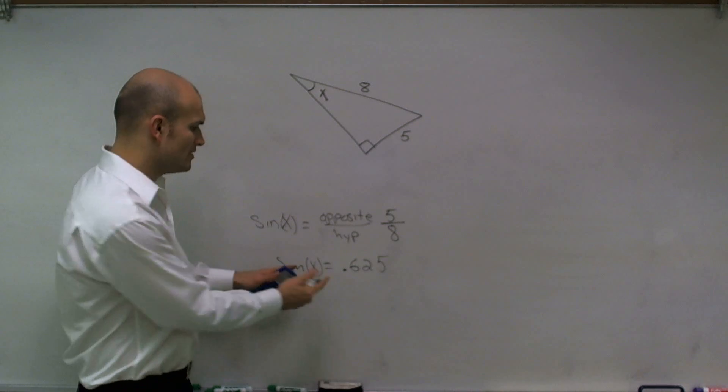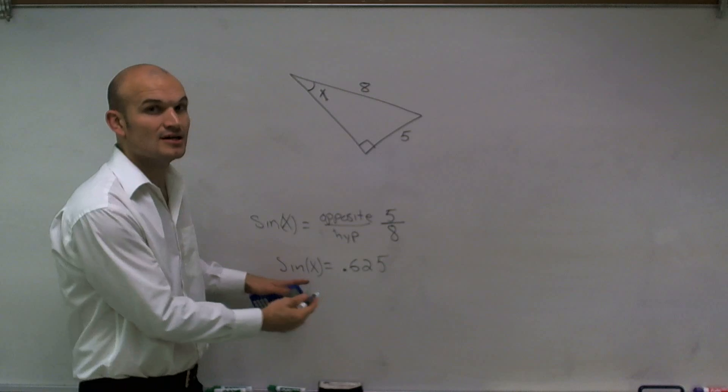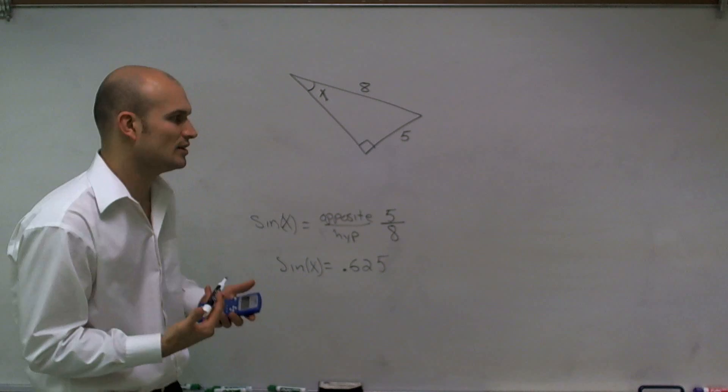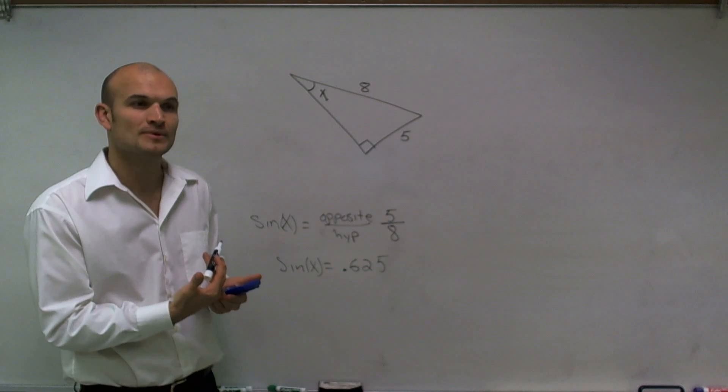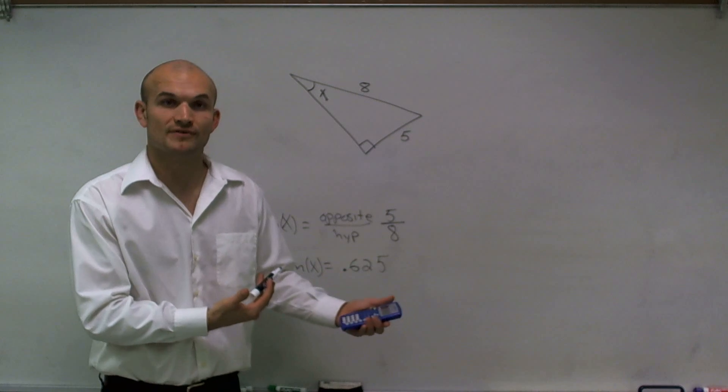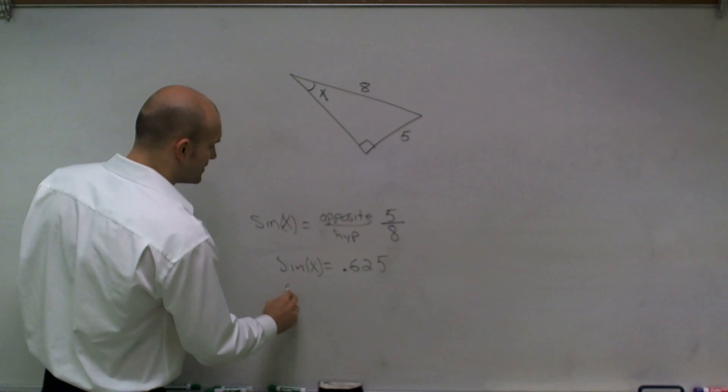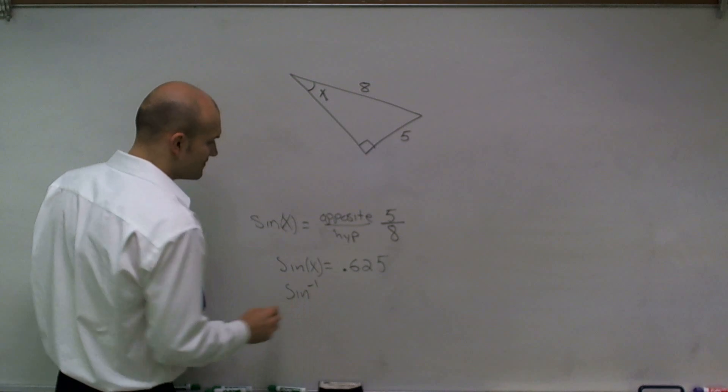But we want to find out what is the value of x. So what I need to do is I need to undo my sine function. And what we call this is to undo your sine function, we need to look at what we call the inverse of the function. So what we're going to do is we want to undo sine, we need to use sine inverse.